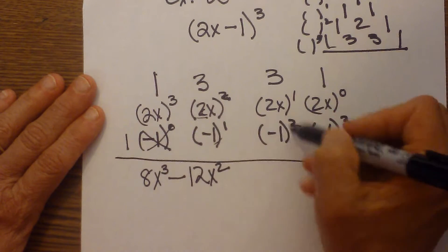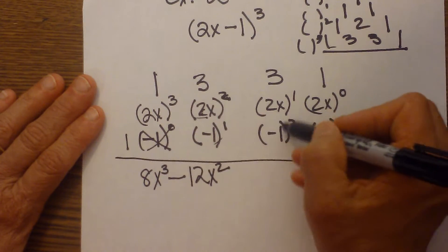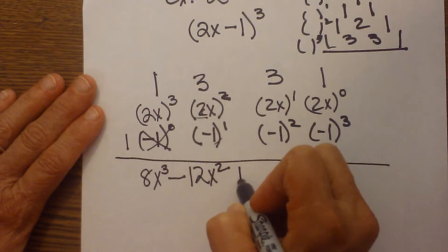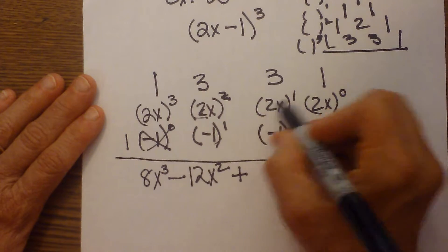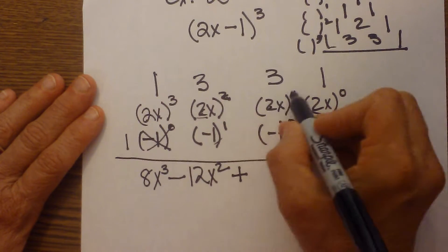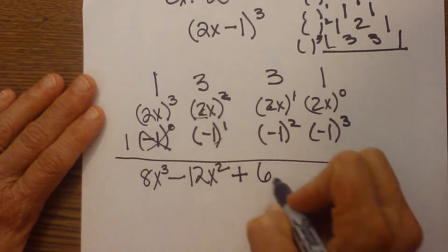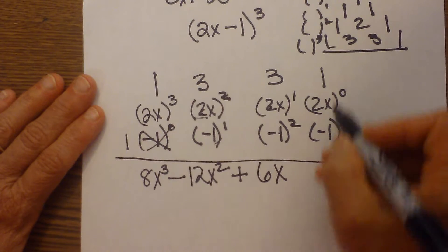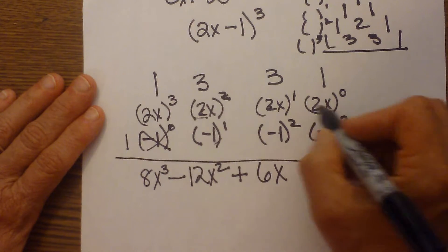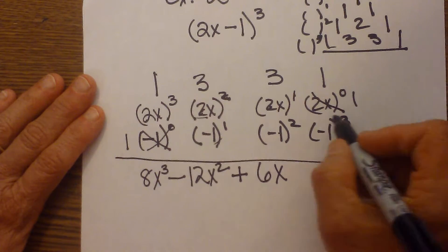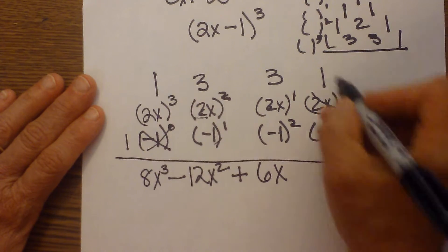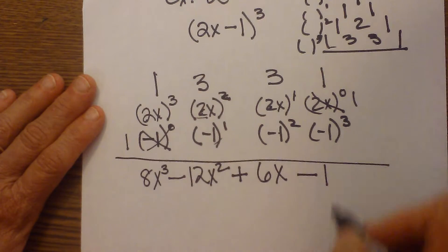My next term, I'm going to take negative 1, and I'm going to square it. Well that means my term is positive. So I have 1 times 2 to the first, which is 2, and 2 times 3, that's 6x to the first power. And then my last term, notice I've got 2x to the 0, so remember that simplifies to 1. Then I have negative 1 cubed times 1, which is just negative 1.